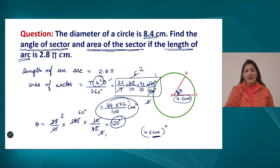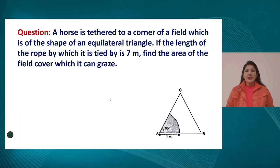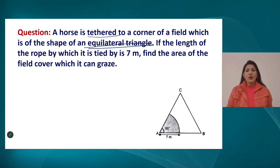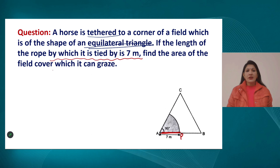The next question: a horse is tied at the corner of a field shaped like an equilateral triangle. The length of the rope with which the horse is tied is 7 metres. We need to find the area of the field that the horse can graze.